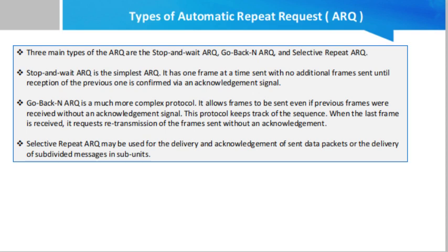ARQ may be used for the delivery and acknowledgement of sent data packets, or the delivery of subdivided messages in subunits. In the first methodology, the protocol continues to accept and acknowledge frames sent after an initial error, doing this until a specified number of frames have been received, called the window size. There is a window size for both transmitting and receiving, and they must be equal. The sequence numbers of all frames not received are tracked and sent back to the transmitter. The sender continues sending frames of unacknowledged data until its window size is reached; when this happens, the sender resends the frame number given by the acknowledgement signal and continues where it left off.